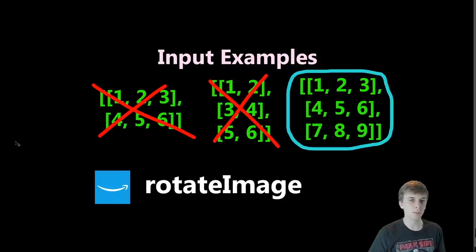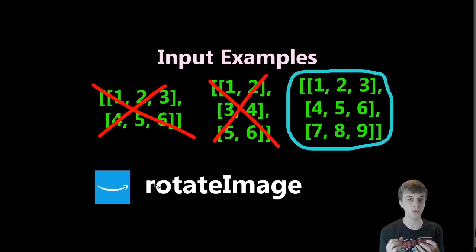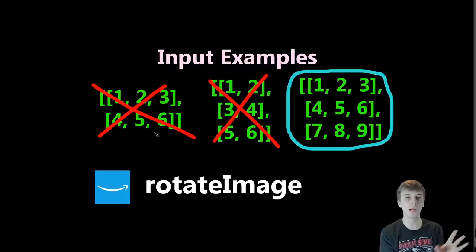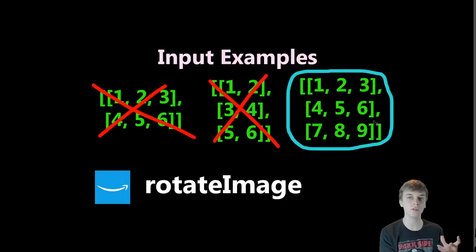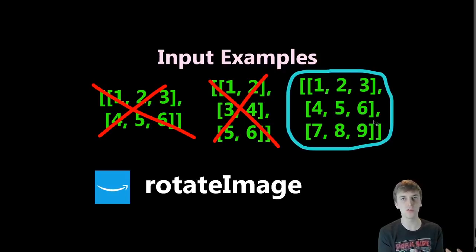Let's look at some examples. In the first example, we have two rows yet three columns. Since the rows and columns aren't the same, that is an invalid input — we would not be getting this in this problem. Similarly, this input has two columns yet three rows, which is also invalid. The last input is exactly what we want: three rows and three columns, a perfect square when it comes to rows and columns. That's what we're dealing with, just to clarify.